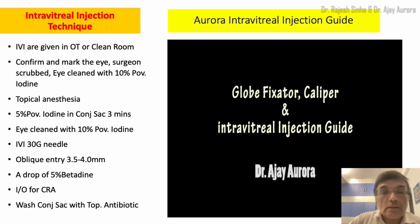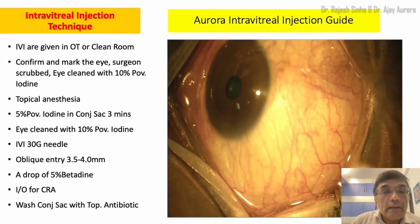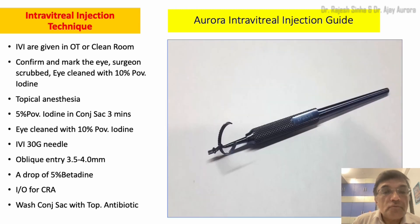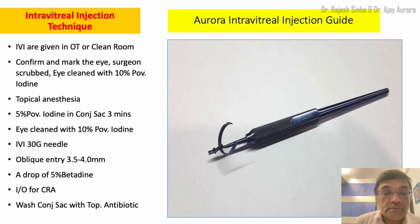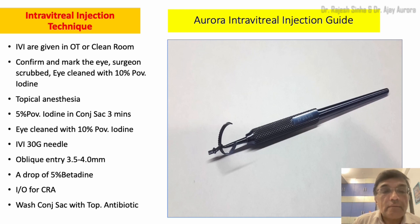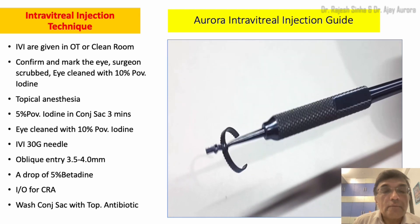This is an easy way of giving intravitreal injections. If you see in this particular video, you will find that the patient was not able to fixate and was moving the eyeball very rapidly. So the only way to give an intravitreal injection would have been to fixate the globe with forceps, measure the distance at which the injection has to be given — meaning both hands would get occupied — and then give the intravitreal injection. See how I did it differently.